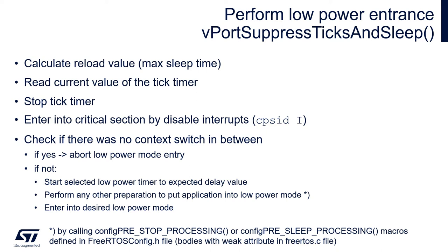Let's have a closer look at the vport_suppress_ticks_and_sleep function implemented for the STM32 platform. The following operations are done in time order: calculating the reload value, reading the current value of the tick timer, stopping the tick timer, entering a critical section by disabling interrupts — which is a much stronger critical section as it blocks all interrupts except reset and NMI. After this, there is a check whether there was no context switch in between; if there was one, low power mode entry is aborted. Otherwise, the selected low power timer is started using the expected delay value, hardware is prepared for low power mode — for example IO line reconfiguration and peripherals deactivation — and finally there is an entrance into the desired low power mode.